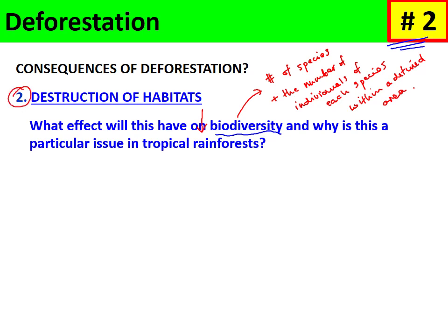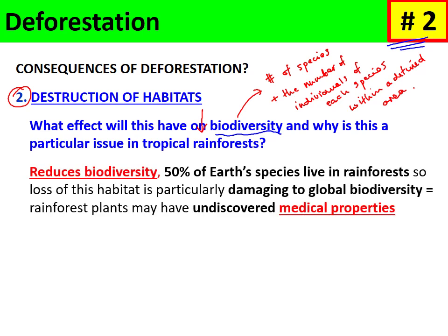This is a particular issue in tropical rainforests, where 50% of the Earth's species live — making them very highly biodiverse. Loss of these habitats is very damaging to global biodiversity. There are probably many species of plants yet to be identified within rainforest ecosystems, and many medications and medicines originate from tropical plants, so deforestation risks the loss of undiscovered medicinal properties and potential medicines.